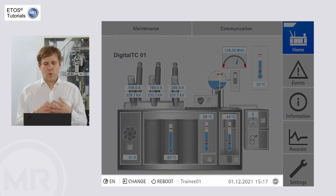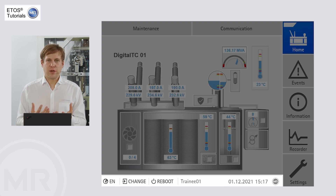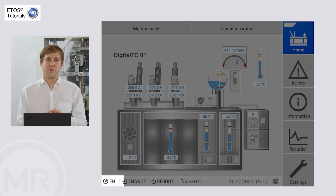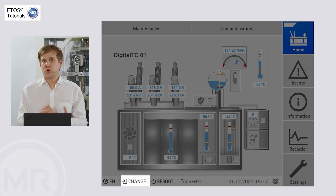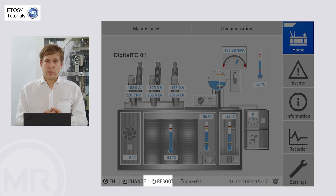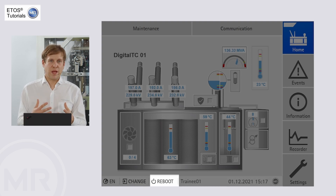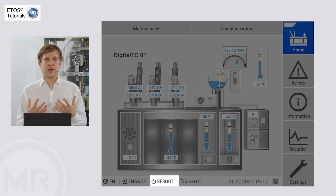At the lower section we have the administrative bar, which holds some very nice features. On the very left there is the language selection. Then we can change the currently active user — the unit has a full user rights management, which I will show in a different video. We can also reboot the unit; the reboot button color is either black or red, where red indicates you still need to reboot for certain parameters to take effect.